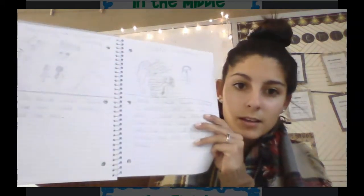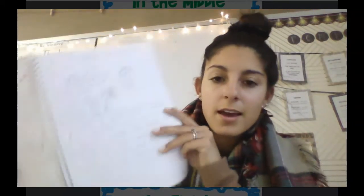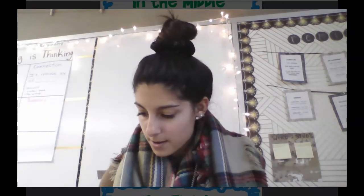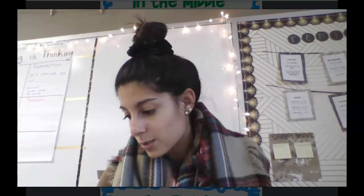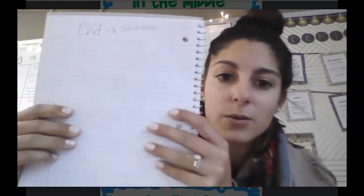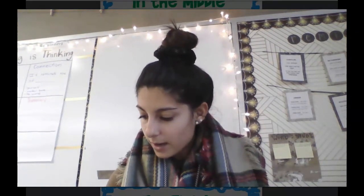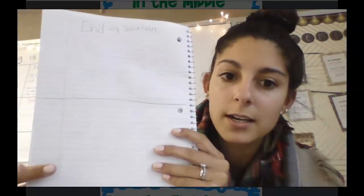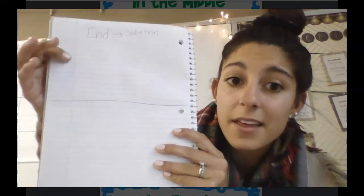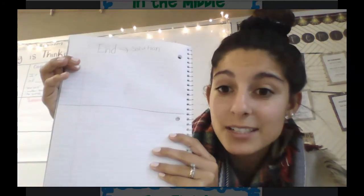The last part is writing your end. Write the word 'end' at the top of your next page — the end tells the solution. Also write the word 'solution' at the top. Draw a line in the middle of your paper for a picture space and writing space, then draw your ending — how does it end?